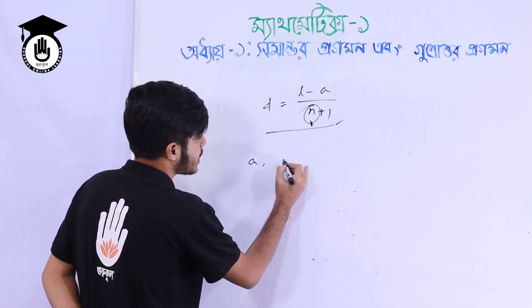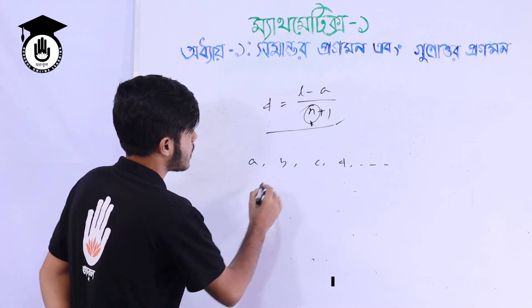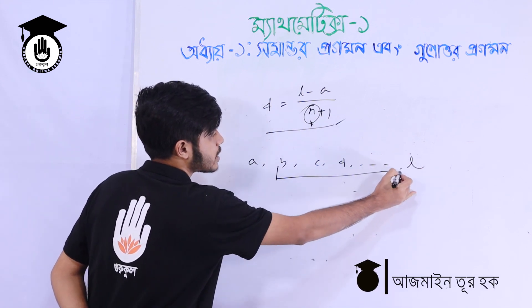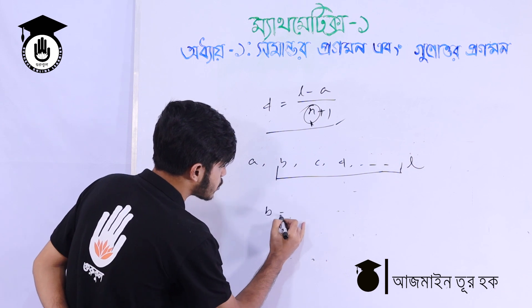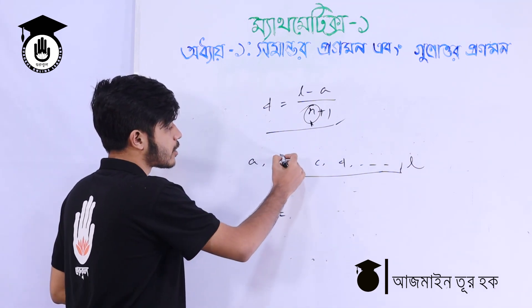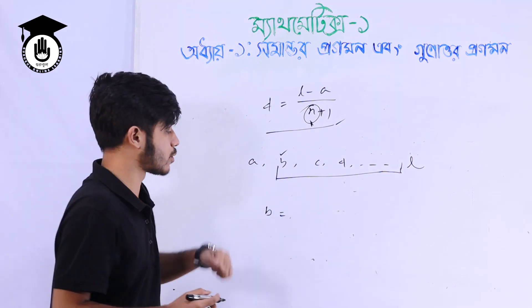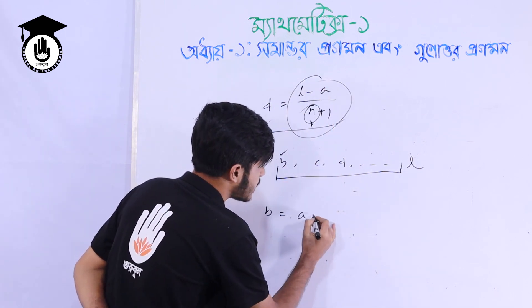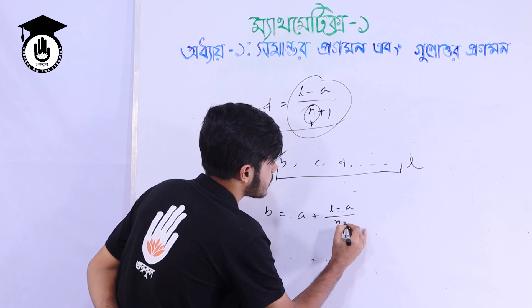We have written b, c, d. b is equal to 6. So let's go to the first step. The first step formula is: a plus l minus a by n plus 1.